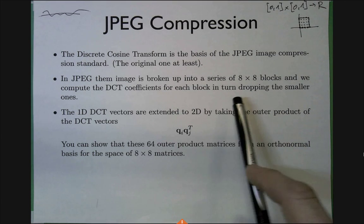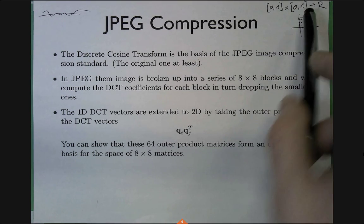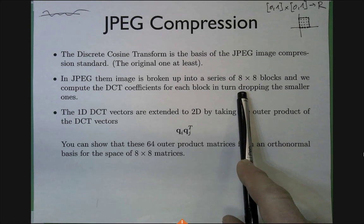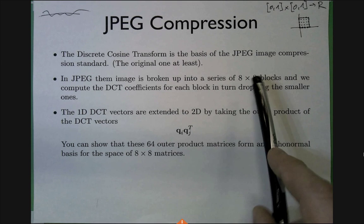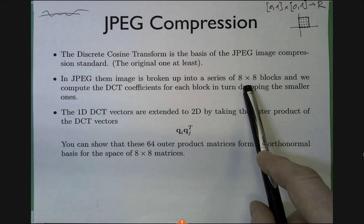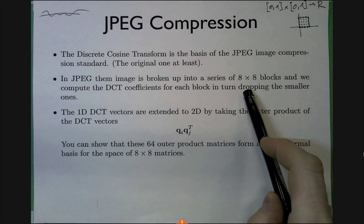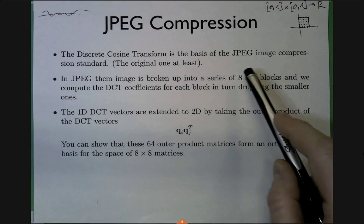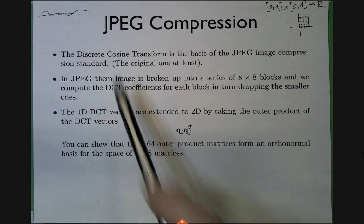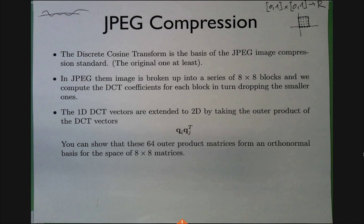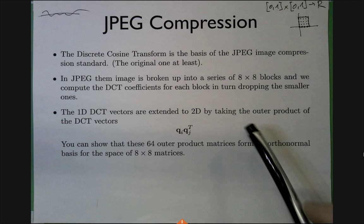If you've ever seen blocking artifacts in JPEG when you dial up aggressive compression, you can start seeing these 8×8 blocks — that's exactly why. The compression via DCT is applied to each 8×8 block, so every block has a different error, and when the error becomes visible you start seeing the blocks. So how do we deal with an entire 8×8 block?